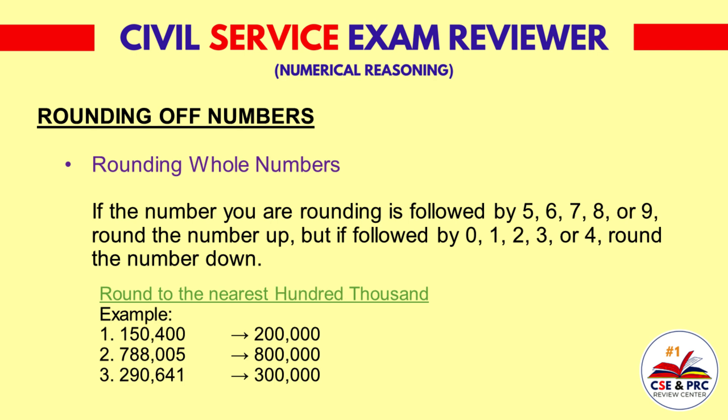Round to the nearest 100,000. Example 1: 150,400 — the result will be 200,000. Example 2: 788,005 — the result will be 800,000. Example 3: 290,641 — the result will be 300,000.